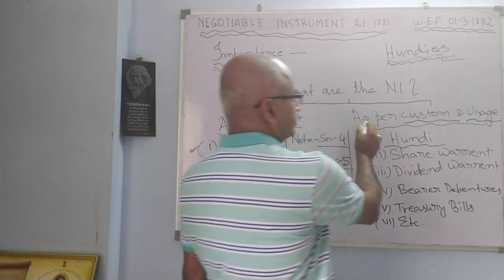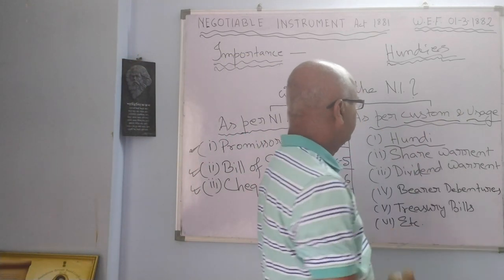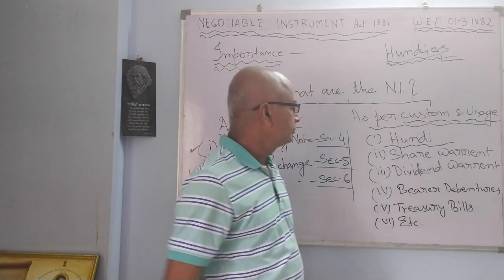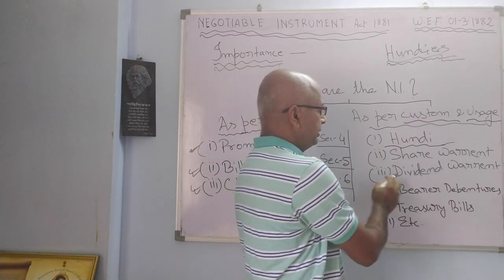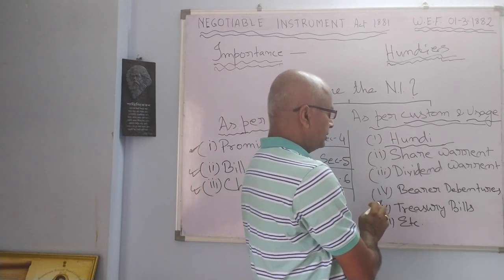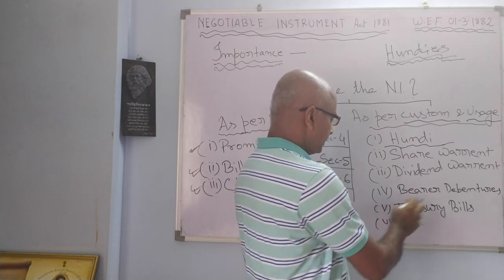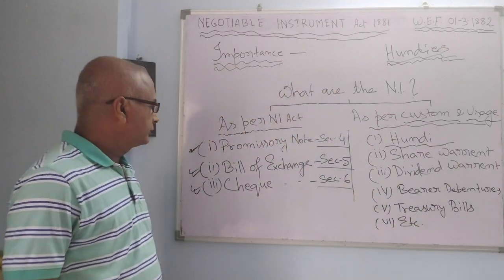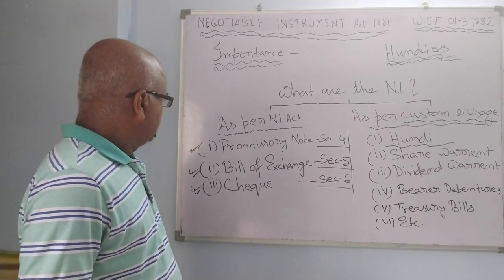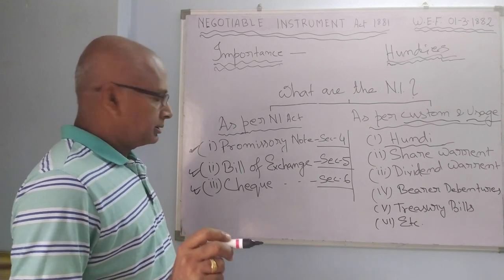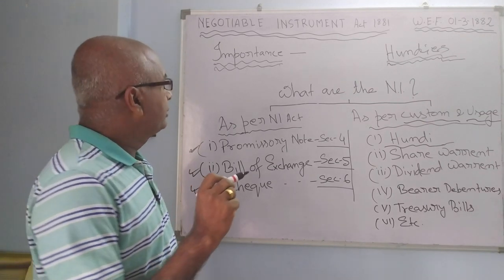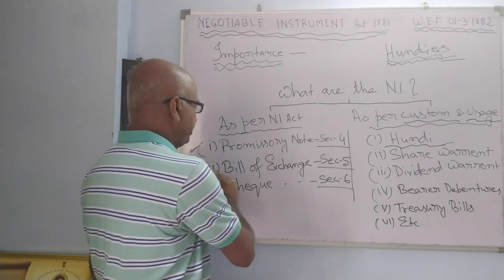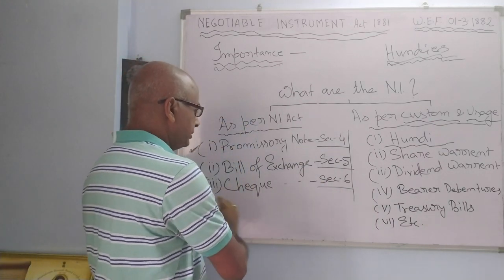As per custom and use, Hundis appear here again, along with share warrant, dividend warrant, bearer debenture, treasury bill, etc. According to the act, negotiable instrument means promissory note, bill of exchange, and cheque.